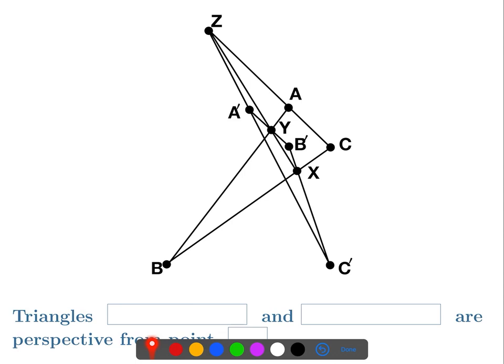We're given that they're perspective from a line, and we're trying to show they're perspective from a point. So we extend AA' and BB', and we call that point of intersection P. What we'd like to know is if it's really perspective from this point P — that the line through C and C' should intersect at P as well. We don't know that this line goes through P like we're showing in this picture.